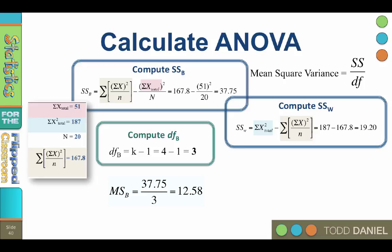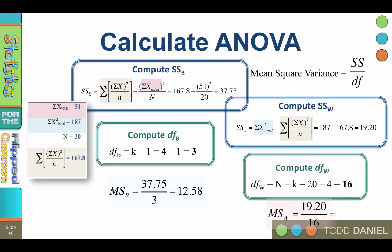And so next we need the degrees of freedom within. We've already calculated this as well. It's n minus k, where n is our total number of participants and k is our total number of categories. 20 munchkins, four regions, the total is 16. Therefore, the mean square or variance within is 1.20.